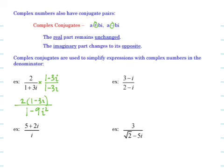I work everything out. The bottom reduces, the denominator reduces to that. I plug through it and I get 2 tenths minus 6 tenths i. That is my standard form for a complex number.